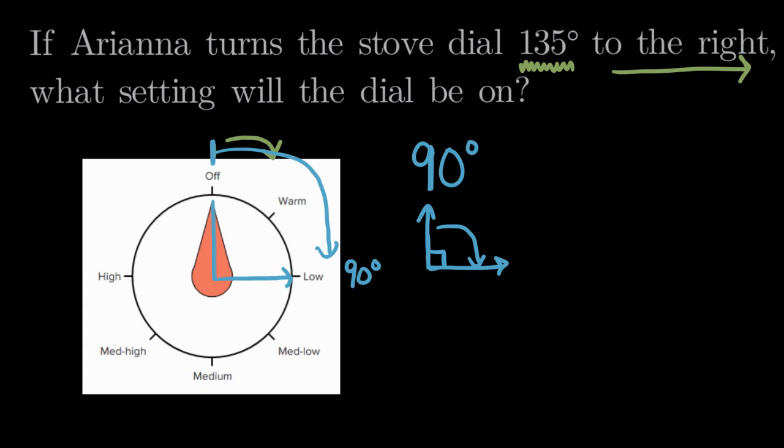Another angle I could use to help me is a straight angle, 180 degrees. If a 180 degree angle again starts at the top like our knob is currently, like our dial, it will go all the way around until we have a straight angle, like this.